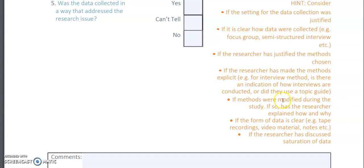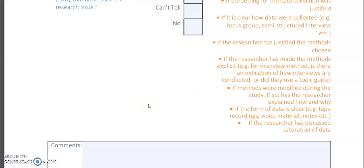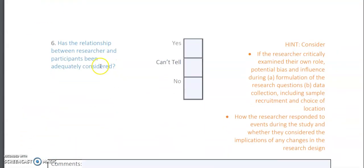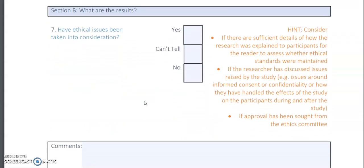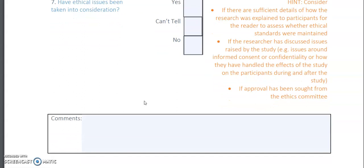Checklist item six asks: has the relationship between researchers and participants been adequately considered? I went through the study and I don't think it was explicitly written — they didn't examine their own role in relation to bias. You can't tell what was done because it wasn't documented. One way to address this is to email the researcher and ask directly; if they reply, you can use that as your answer.